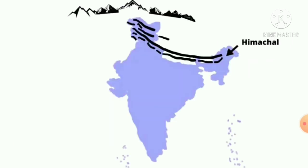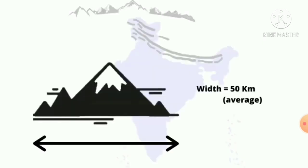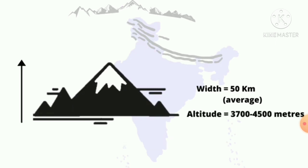The second range is the discontinuous range, which we call the Lesser Himalayas. Its average width is about 50 km. The elevation is around 3,700 to 4,500 meters above sea level.